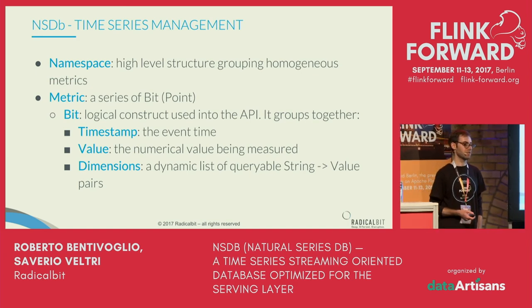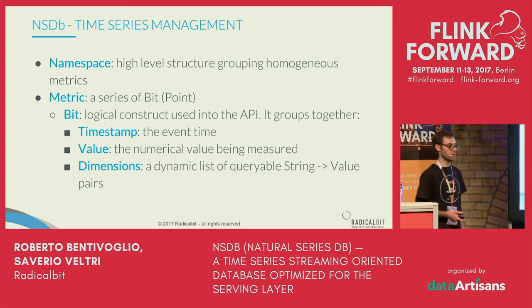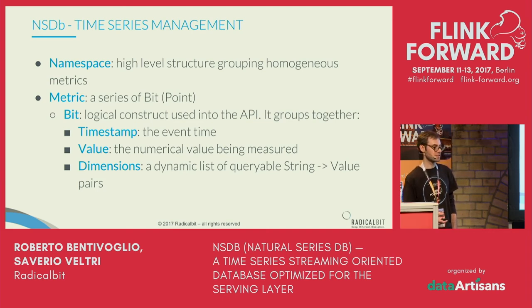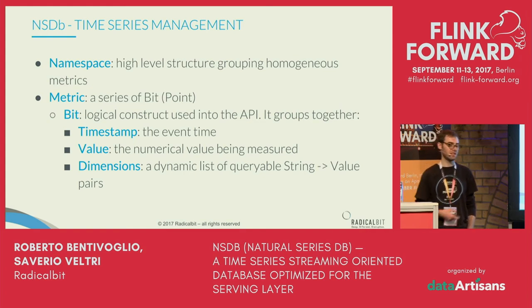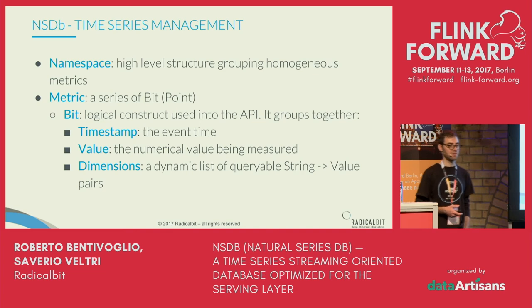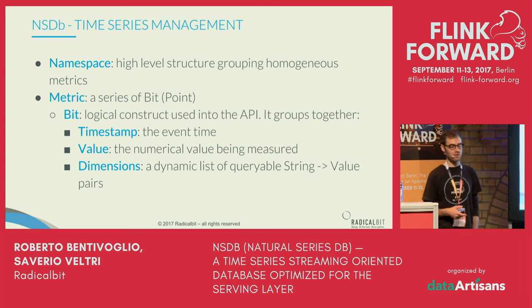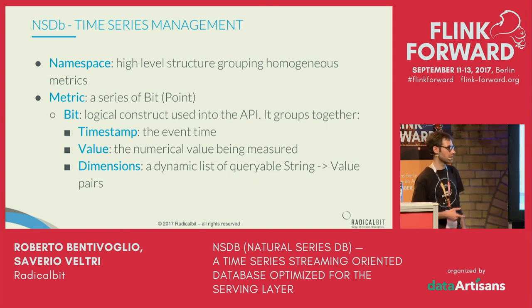We have a value — a numerical value we want to measure, something like an integer, long, double, or float. Finally, we have dimensions, which are like labels or tags — a dynamic set of key-value pairs. For instance, one bit can have 10 dimensions, another bit from the same metric can have 2 dimensions, and another can have 15 or 20 dimensions. The schema is dynamic — when you write data, the database automatically creates the new schema. If you create a new bit with new dimensions, the schema changes automatically without any manual intervention.